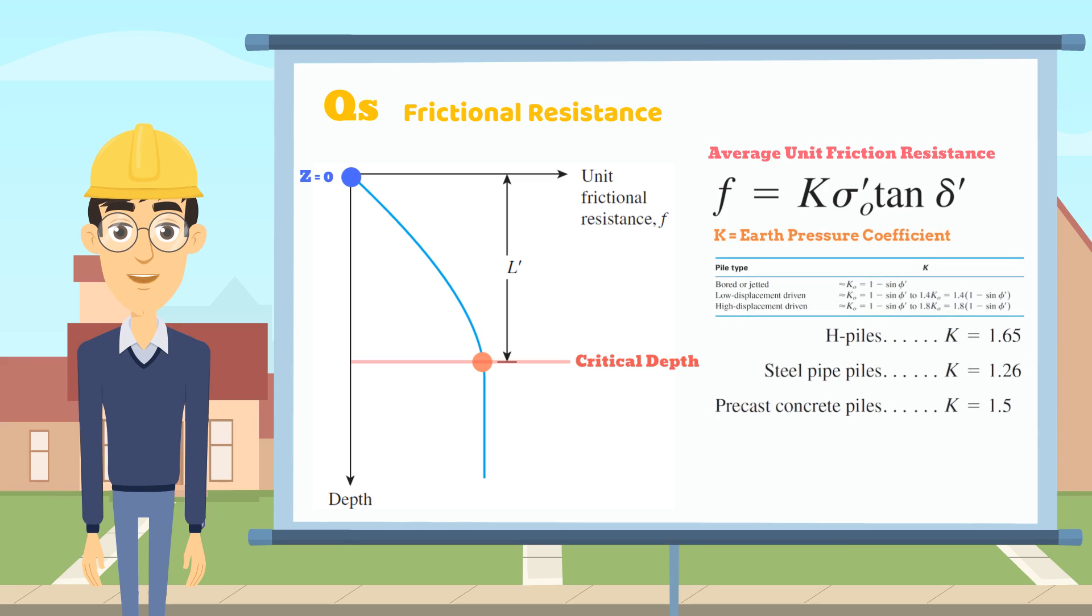In the equation, K is the earth pressure coefficient. We can estimate it by the pile type with these formulas or data.